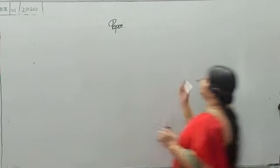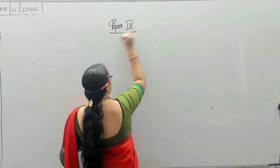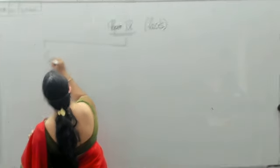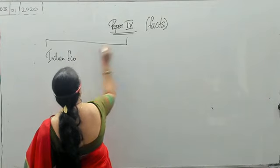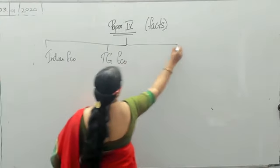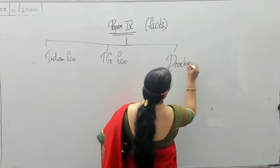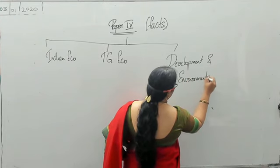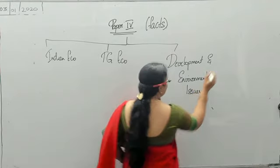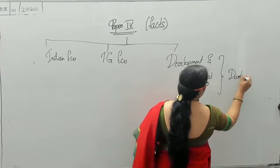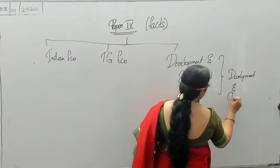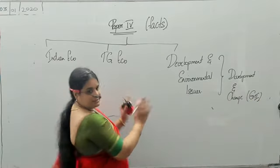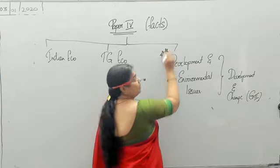Now, Paper 4, according to me, this is the paper which has the maximum facts because it is Indian economy, Telangana economy, and development and environmental problems. Please remember, this area you actually studied as development and change in Group 2. But here, again, in these three areas, I will say this is an area where you have a lot of scope for analytical questions.